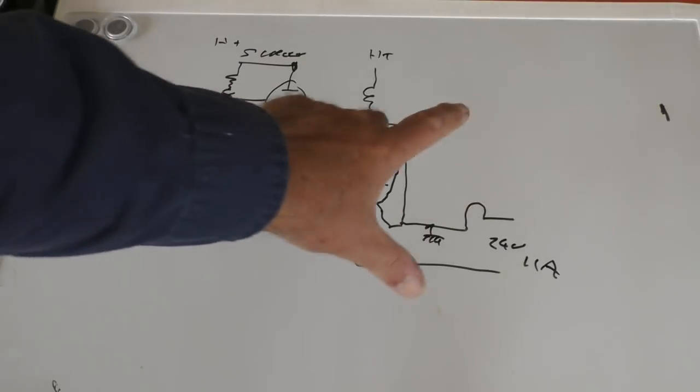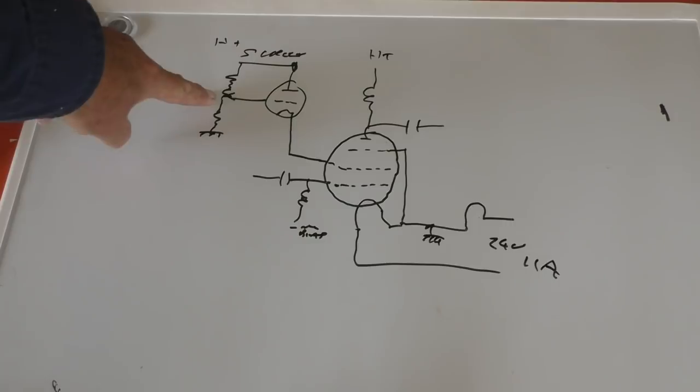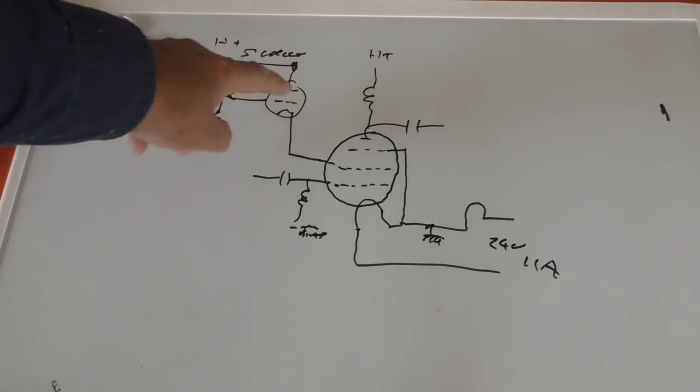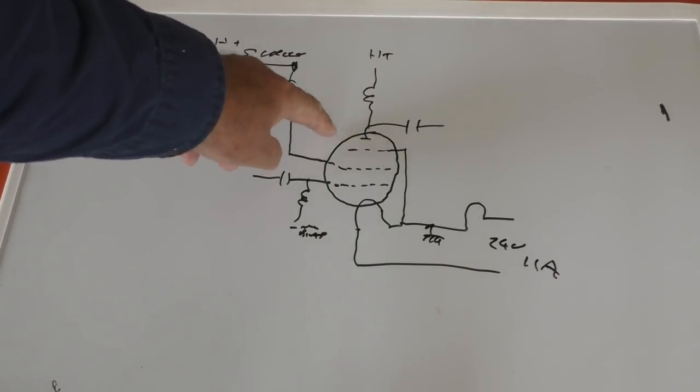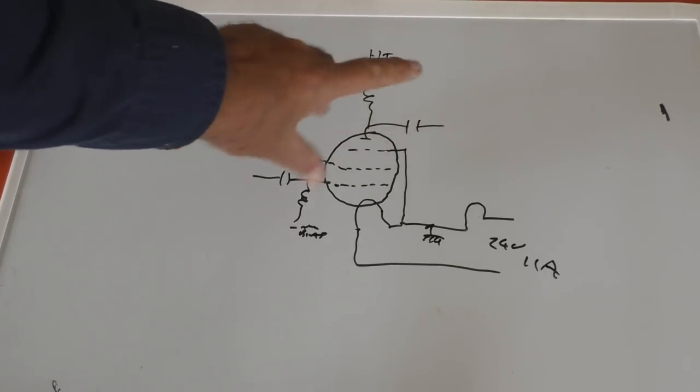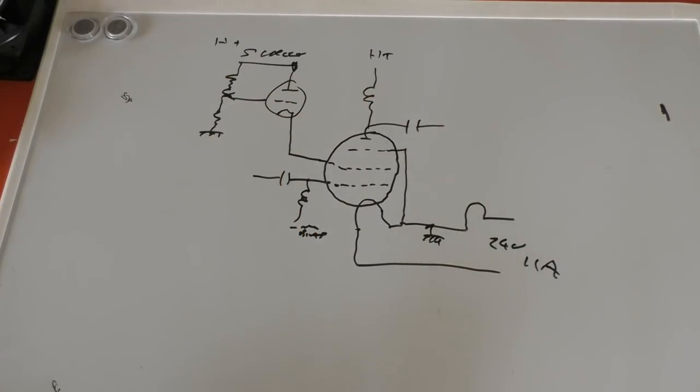And you would tune that up as an ordinary class C amplifier, then you would adjust that which would effectively reduce the screen voltage until the anode current was about 50% of what it was once the transmitter was tuned as a normal class C stage, and then you apply your modulation.